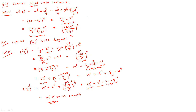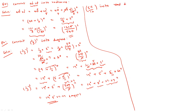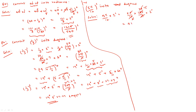Next question: convert 5 pi by 12 radians into degrees. Take 5 pi by 12 radians, which means 5 pi by 12 into 1 radian. One radian equals 180 by pi degrees. The pi cancels, and 12 divides into 180 giving 15. So 5 times 15 equals 75 degrees.